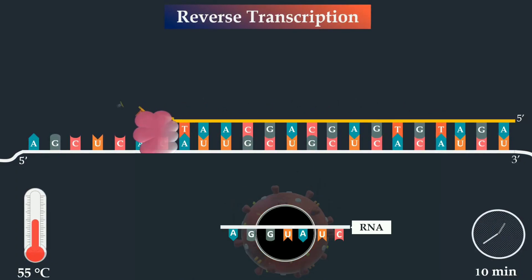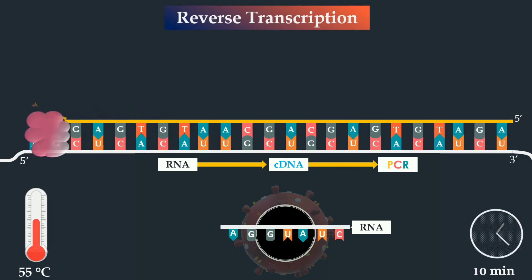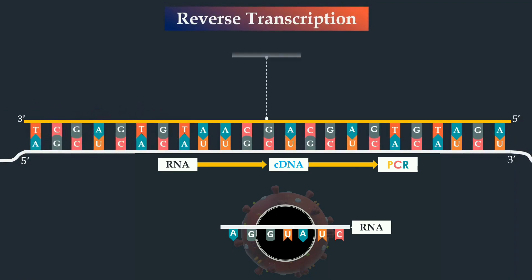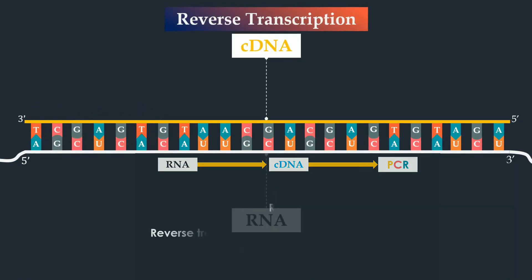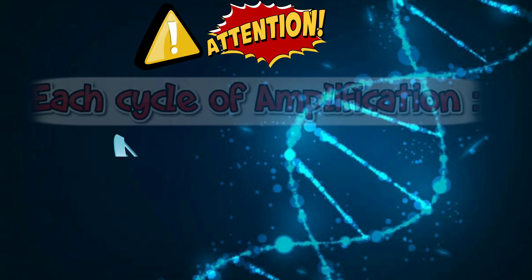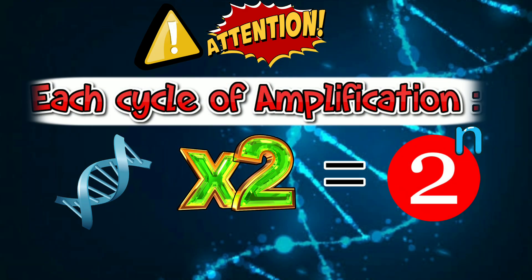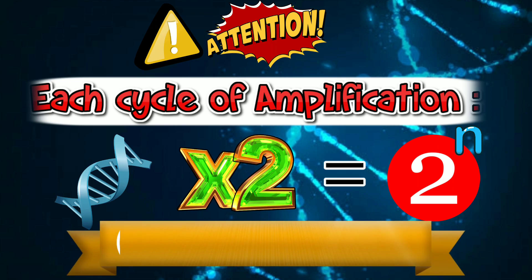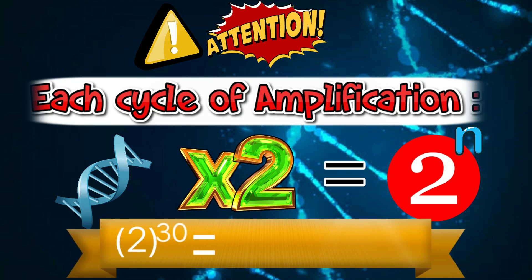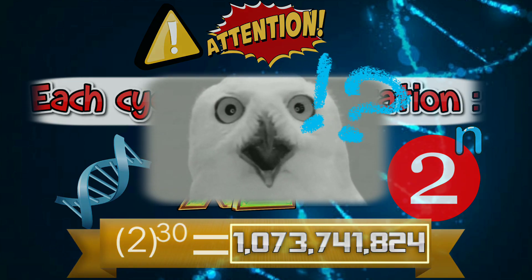Now this DNA can be easily amplified using a polymerase chain reaction. This would make billions of copies of a fragment rapidly — each cycle of amplification doubles the amount of DNA. So if there is just one DNA molecule to start with, the amount of DNA after 30 cycles would be 2^30 times, which is around 1 billion.